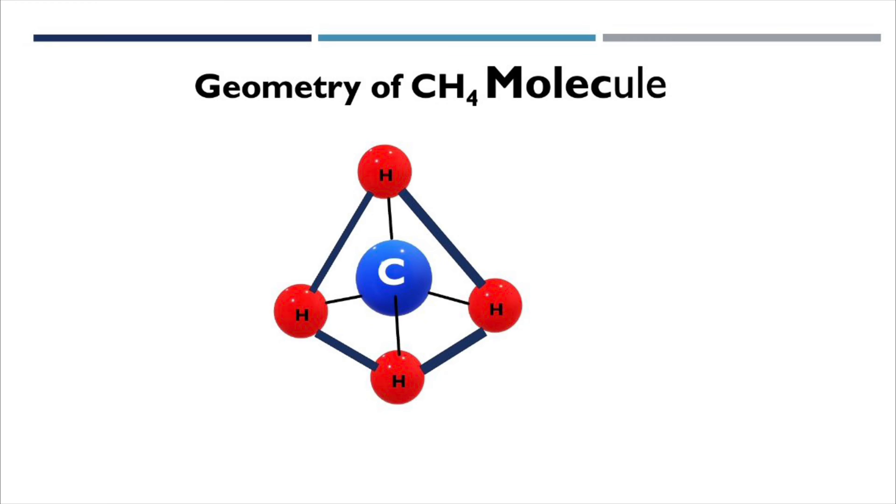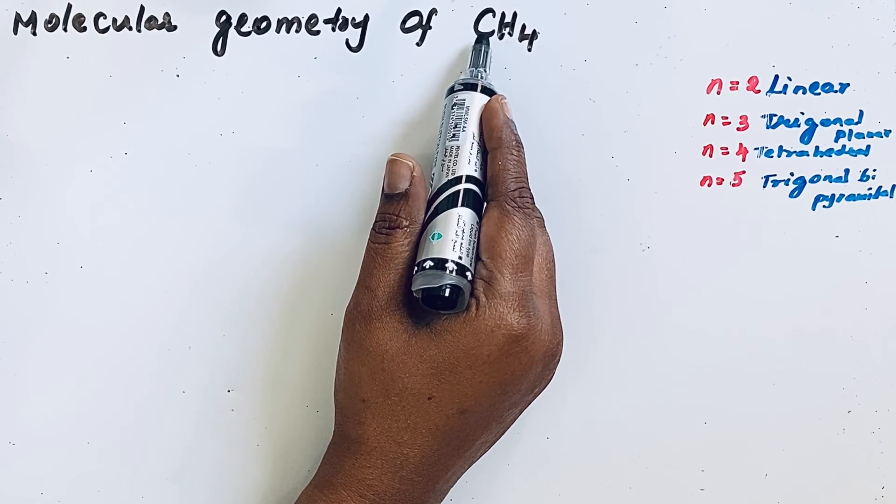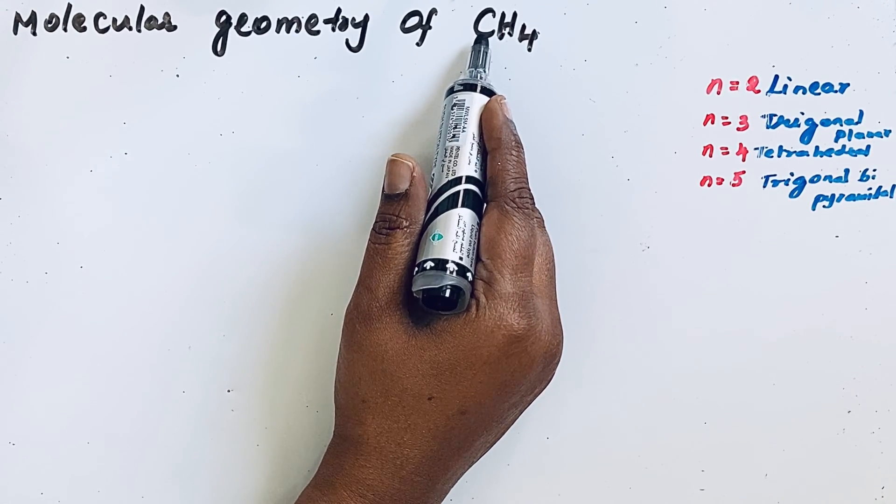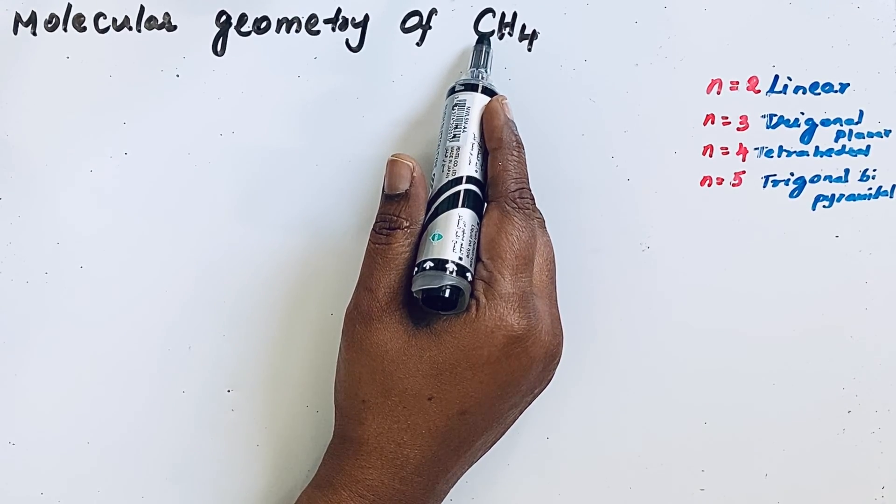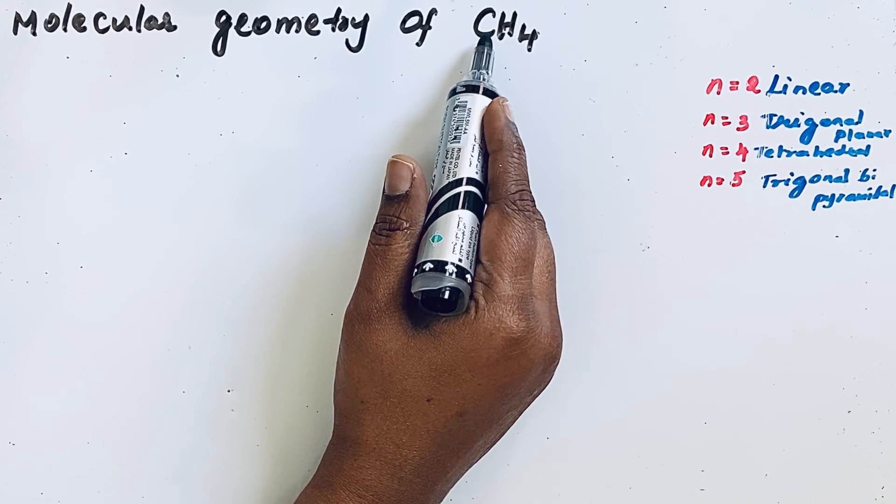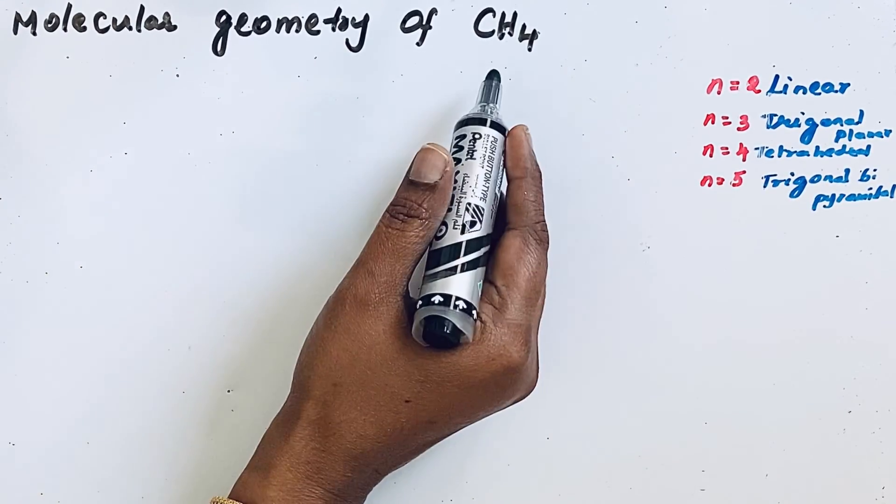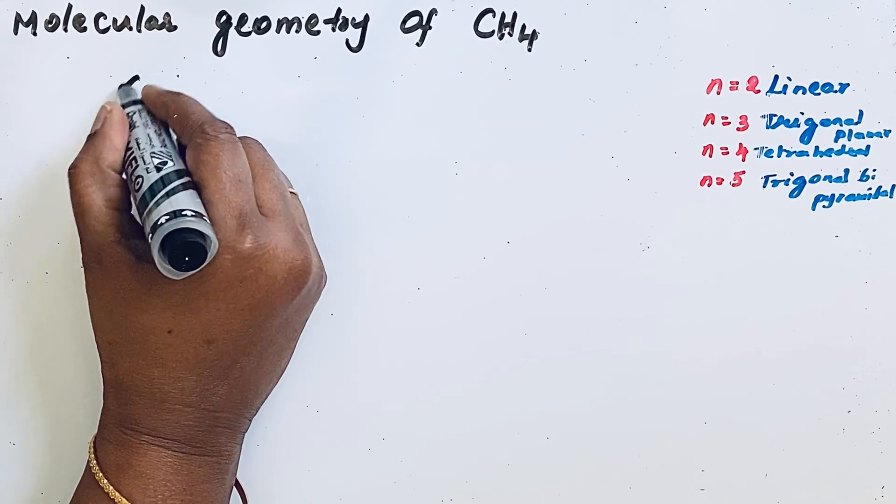Always the less electronegative element takes the position of the central atom. Here carbon and hydrogen both are less electronegative, but hydrogen as a central atom we are not entertaining, so carbon, atomic number 6.